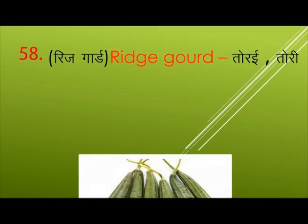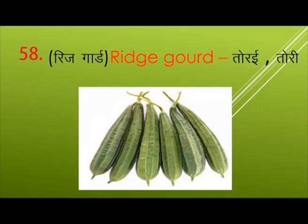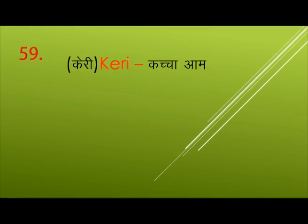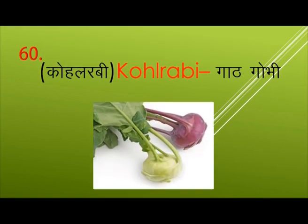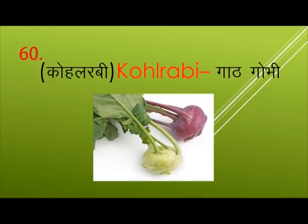Ridge Gourd — Turai. Raw Mango — Kachcha Aam. Kohlrabi — Gant Gobi.